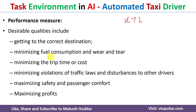If you consider minimizing fuel consumption, minimizing trip time and cost, then maximizing safety, passenger comfort, and profit will also be achieved. These are the performance measures for the automated taxi driver — this is the first component of task environment in artificial intelligence, that is P.